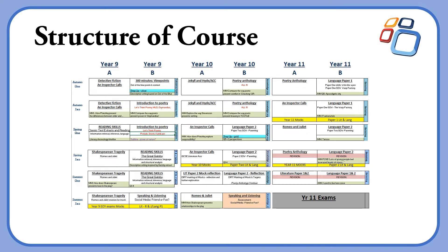Although students do study some GCSE texts — An Inspector Calls and Romeo and Juliet in year nine — we look at these texts closely in terms of their genres. So we explore detective fiction and Shakespearean tragedy, aiming to ignite a love and interest in the stories through a deep understanding of the context in which they were produced and received. In year nine we also endeavour to continue to develop the depth and breadth of student knowledge and skills through a study of a wide range of literature.